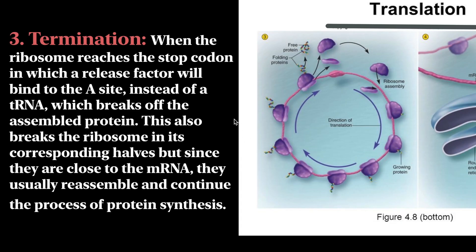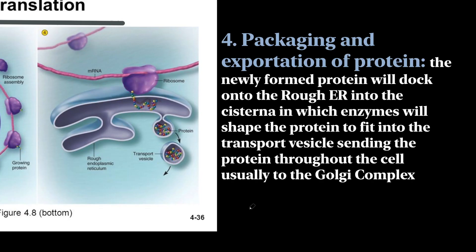Now we're at the third stage: termination. This is when our ribosome contacts a stop codon. When this happens, a release factor adheres to the A-site instead of another tRNA. The protein is taken off the ribosome, and the ribosome splits. Since the two subunits are close to the RNA, they bind together and go through the whole process again. The fourth and final stage is packaging and exportation of protein. The free protein docks the rough endoplasmic reticulum, where enzymes fold the protein to fit in a transport vesicle, which is taken out to the Golgi complex, which adds lipids and sends it out of the cell.